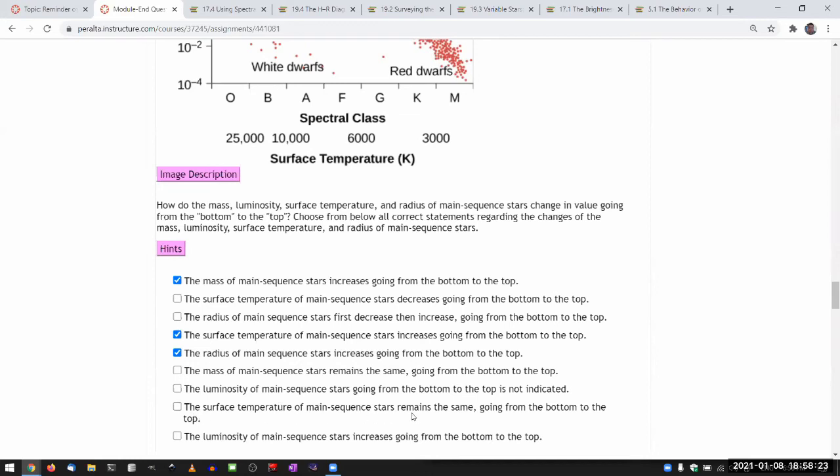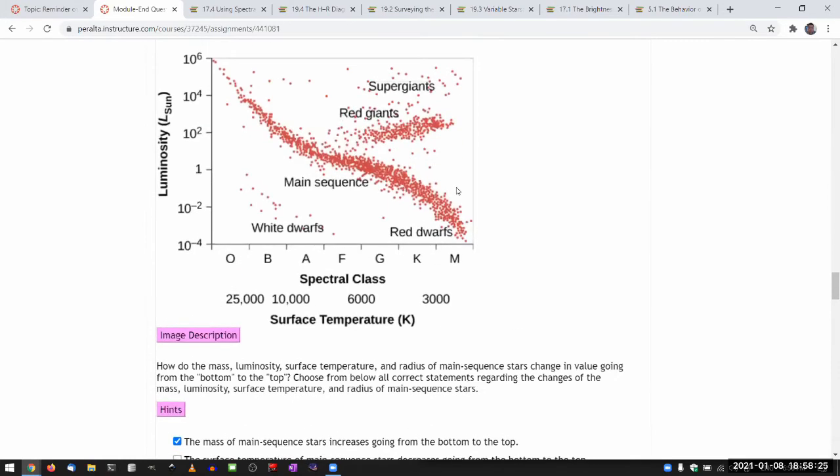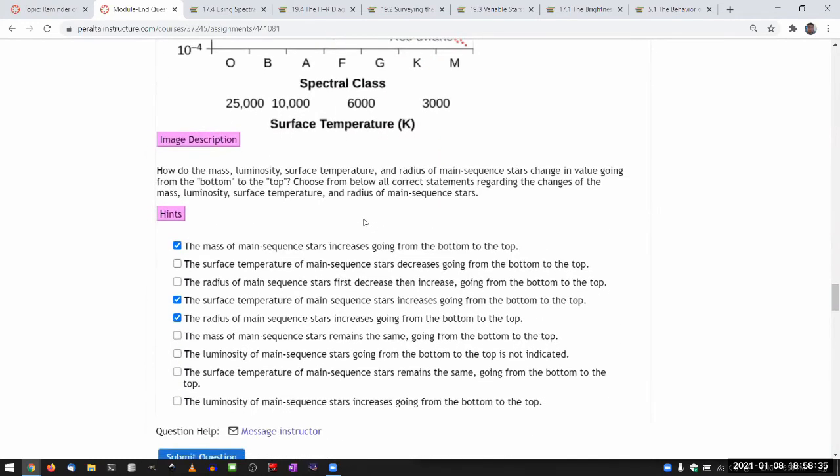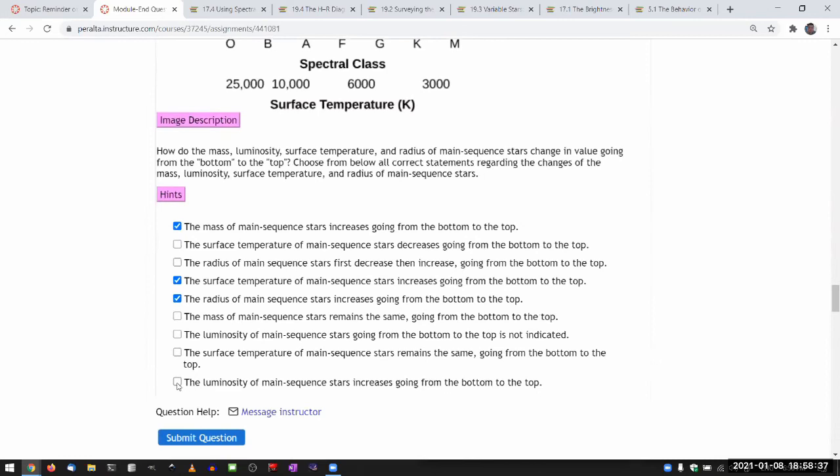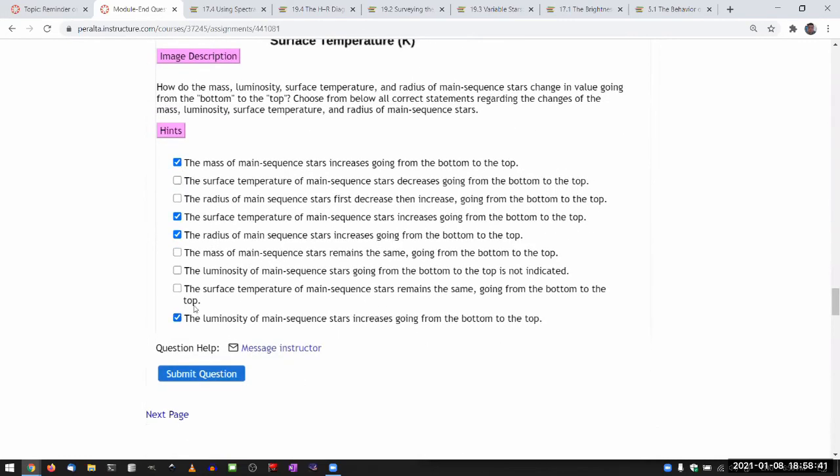Surface temperature remains the same. Again, no, because if you're just moving directly up, sure, you are at the same temperature, but you are following the main sequence line. So the temperature is changing along that line. Luminosity of main sequence increases. Okay, that sounds right. So these four choices there.